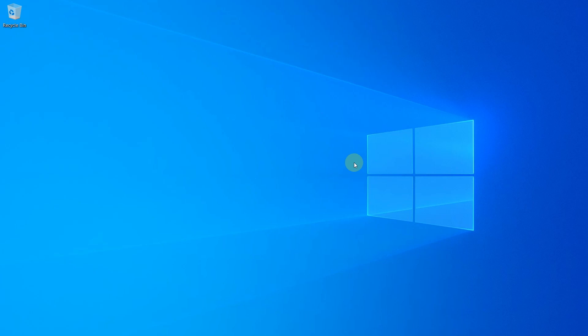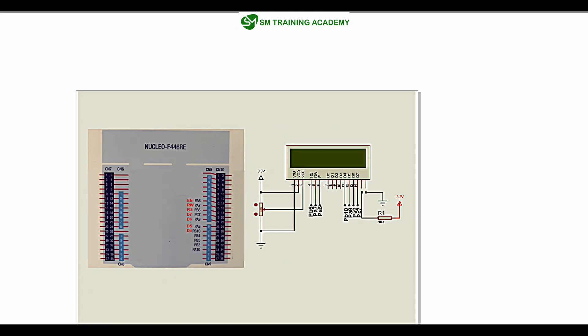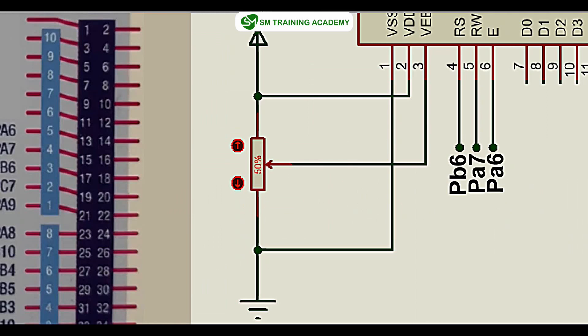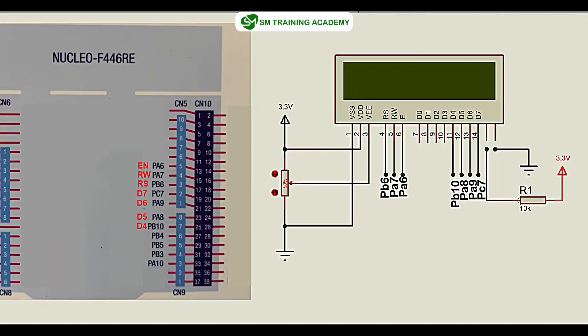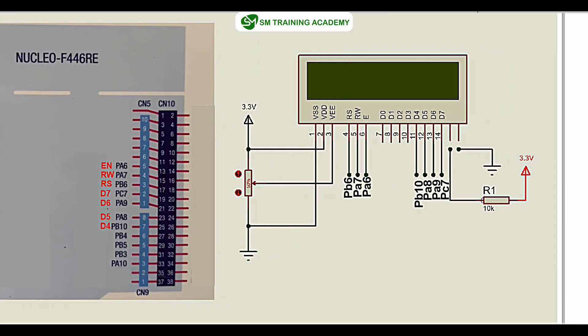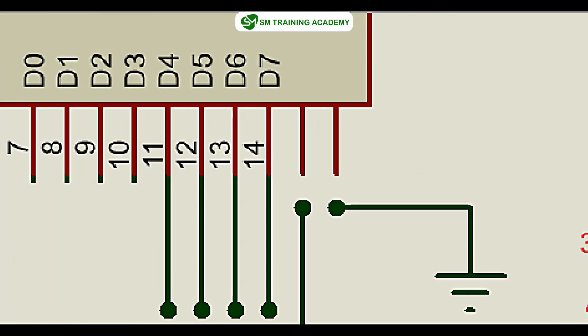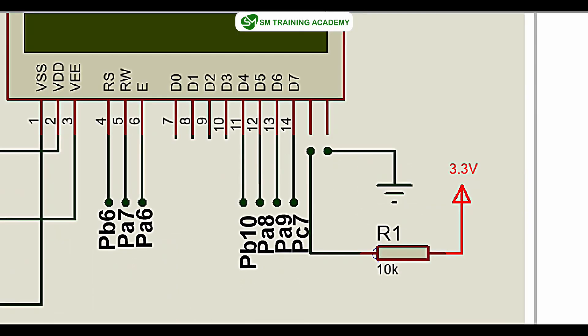We are interfacing the 16x2 LCD in 4-bit data mode with STM32 F446RE. The first pin of the LCD connects to ground, the second pin to the 3.3V pin of the Nucleo board — powering the LCD from the board. The VEE pin connects to a 10k ohm variable resistor for varying the contrast. The 15th pin is the anode of the backlight, connected to 3.3V through a 1k ohm resistor for brightness.